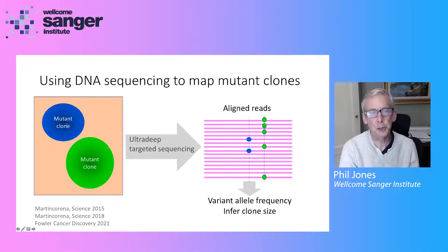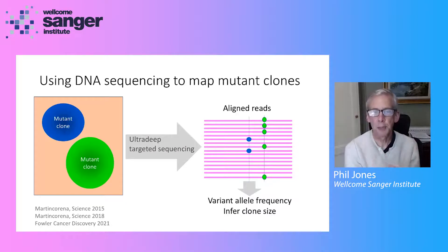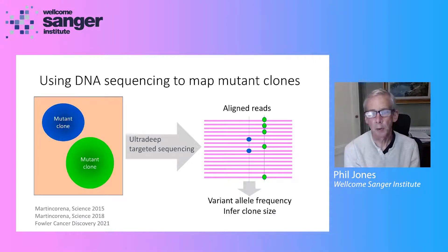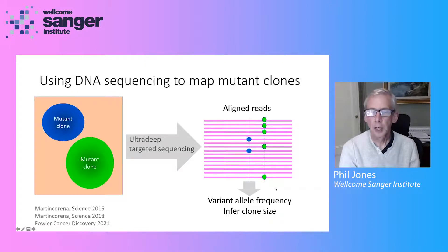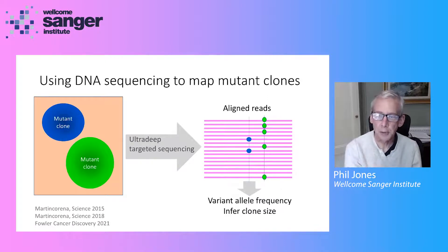You take a small piece of the epithelial lining and imagine it contains two clones — a blue clone and a green clone — both mutated in the same gene. If we sequence a small piece of epithelium very deeply using targeted sequencing, and then align the reads, we would expect to see a small proportion of reads carrying the blue clone mutation and a slightly larger proportion carrying the green clone mutation. Because this is normal diploid tissue, we can extract clone size from the variant allele frequencies.